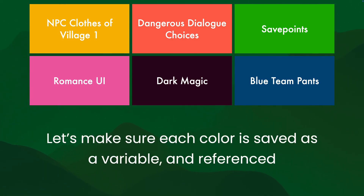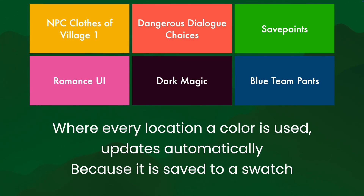So let's make sure each color is saved as a variable and referenced. Because in that case, if we change something, it will update automatically. So where every location of color is used, it updates automatically because it's saved to a swatch. The artists say, hey, this is the dark magic color — you use the dark magic color in various places. And now if the dark magic color updates, it updates wherever it's also used.